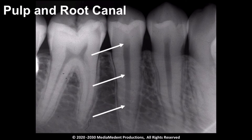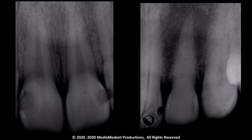Pulp consists of soft tissue and, as a result, is the most radiolucent component of the tooth's image. As shown here, the contour of the pulp chamber and root canal is normally smooth. Irregularity in this contour or a decrease or increase in the observed size of either the chamber or canal may suggest pathosis. As a person advances in age or a tooth is subjected to trauma, secondary dentin may be laid down on the walls of the pulp chamber and root canal. This causes these structures to appear more narrow or even obliterated because secondary dentin has a radiodensity similar to primary dentin. This is evident in the illustration to your right.